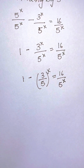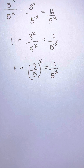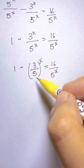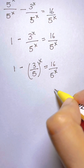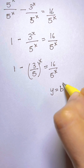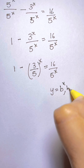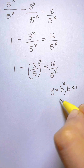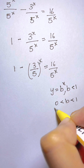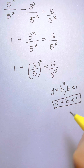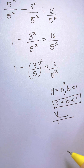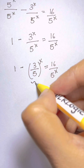Now let's see what these functions actually depict. Whenever you have a function y equals b to the power of x, and b lies between 0 and 1, your function is actually a decreasing function. So (3/5)^x is a decreasing function.